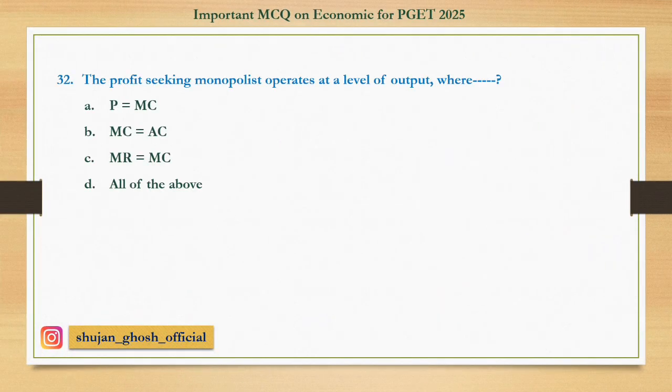Question number thirty-two: A profit-seeking monopolist operates at the level of output where — option A: P equals MC; B: MC equals AC; C: MR equals MC; D: all of the above. Answer: MR equals MC.